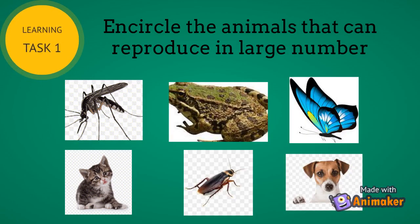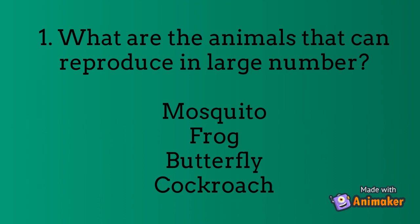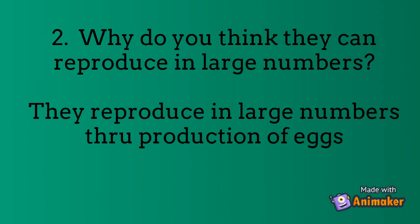Let's proceed to our learning task number 1: encircle the animals that can reproduce in large numbers. Question 1: What are the animals that can reproduce in a large number? We have mosquito, frog, butterfly, and cockroach. Question 2: Why do you think they can reproduce in large numbers? They reproduce in large numbers through the production of eggs. Question 3: What are the animals that reproduce in fewer numbers? We have cat and dog.